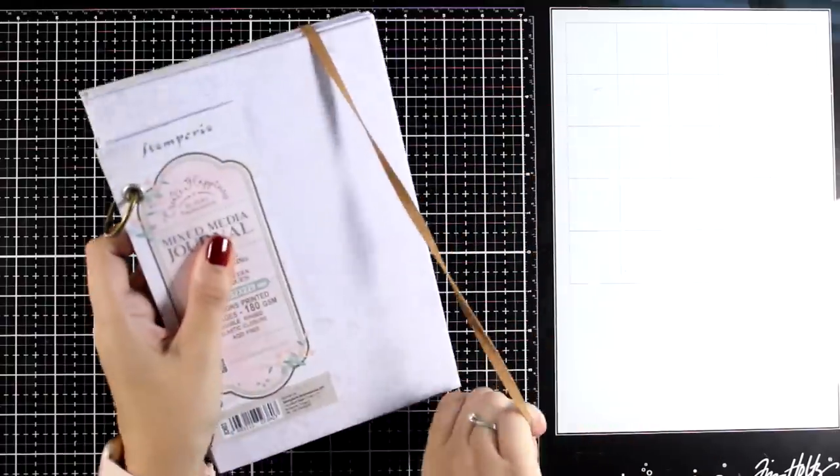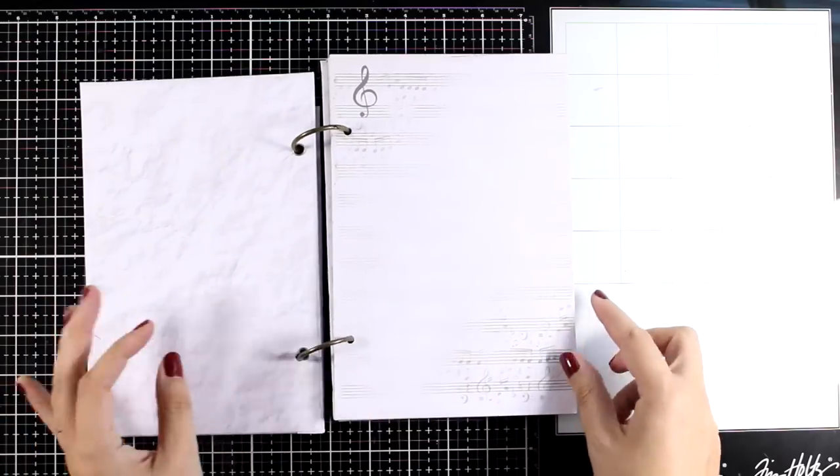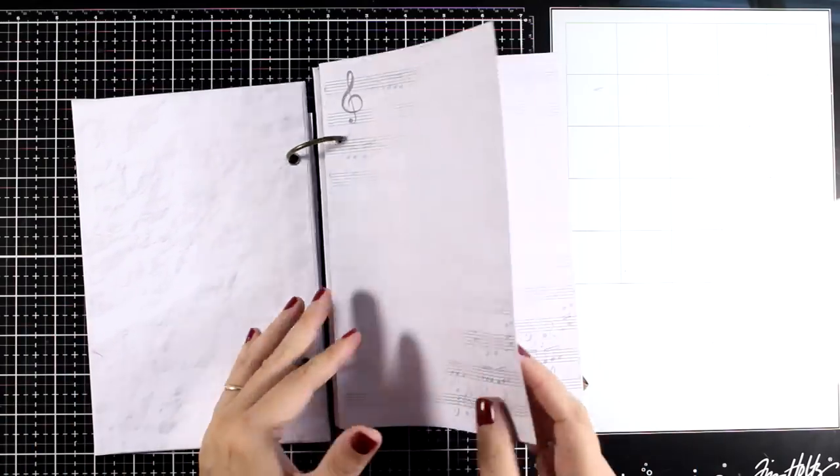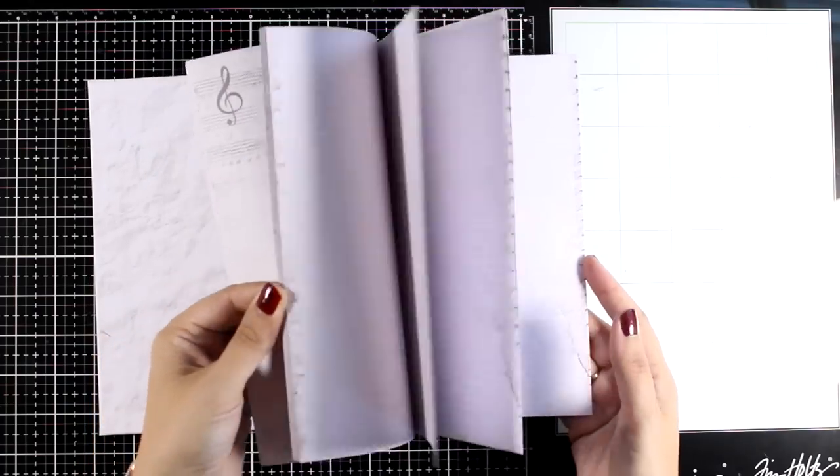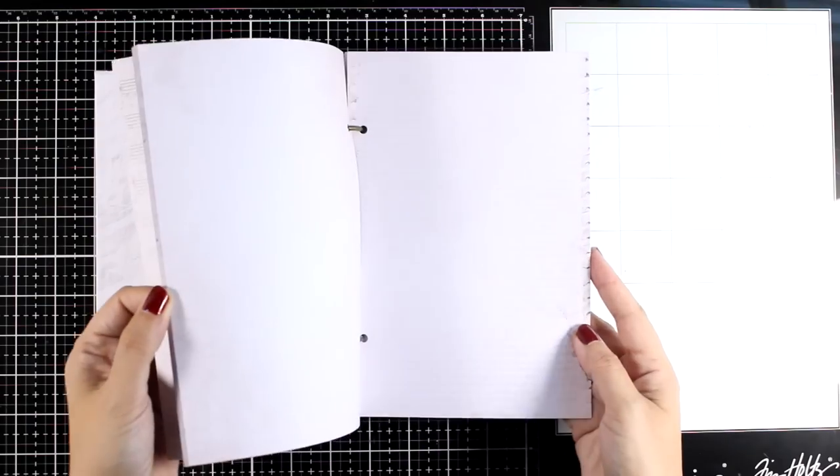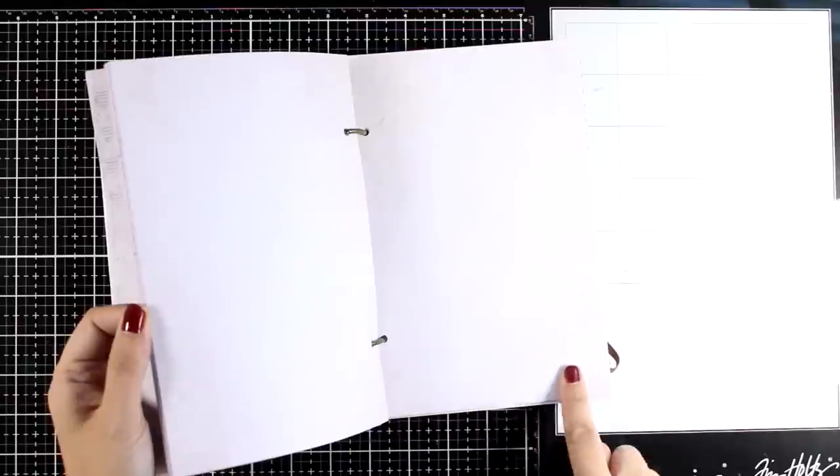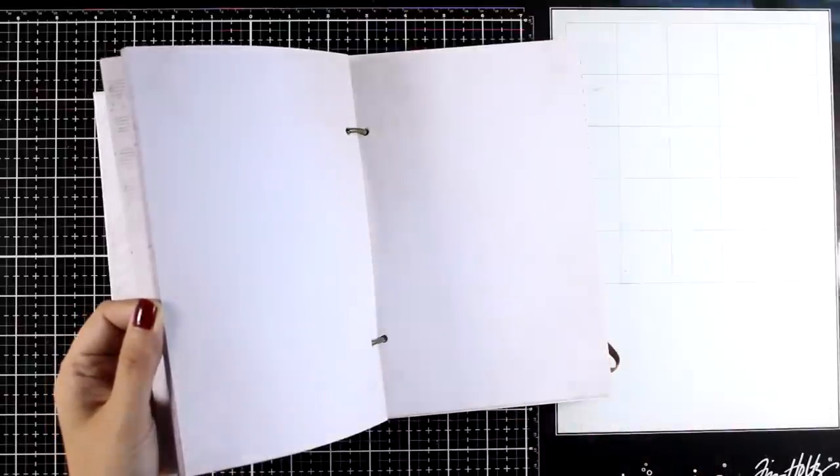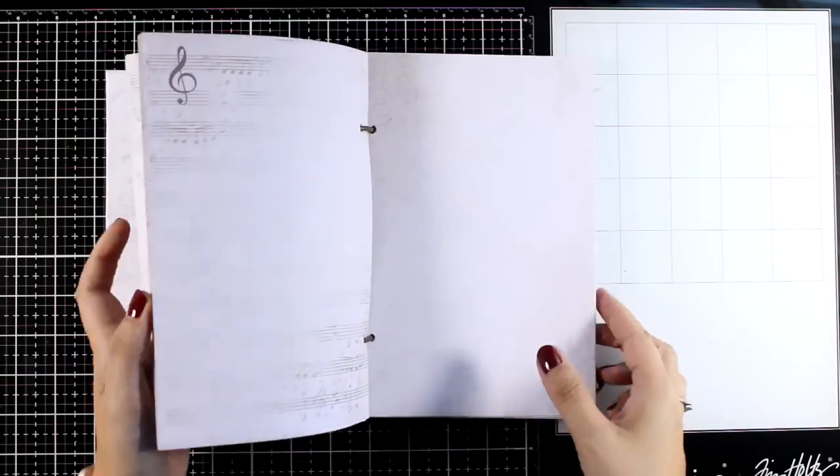This one has an elastic to keep all the pages together and then the pages inside have a printed background. Very subtle but you will find eight different designs repeated, 80 pages in total here. This is great for beginners because you know where to start, you already have something there. At the same time you can take out the page, work separately, and if you like the outcome you can put it back in the book.